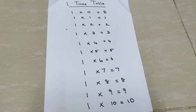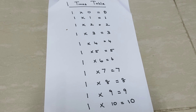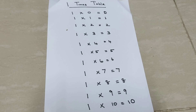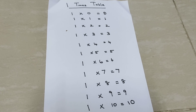1 zeros are 0, 1 ones are 1, 1 twos are 2, 1 threes are 3, 1 fours are 4, 1 fives are 5, 1 sixes are 6, 1 sevens are 7, 1 eights are 8, 1 nines are 9, 1 tens are 10.